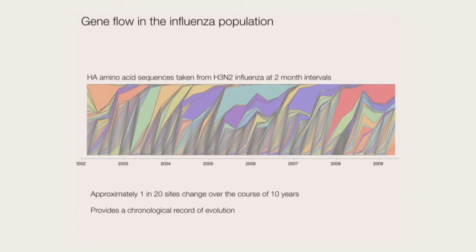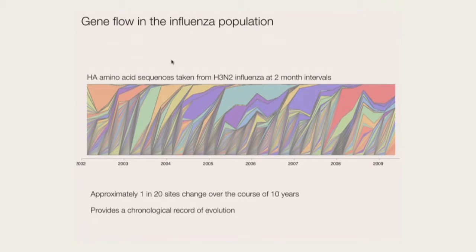If we look at H3N2 over time, we see really fast evolution. I've gathered all the sequences I can from GenBank. You're basically seeing a histogram where at one point about 40% of flu in GenBank is one particular strain, but there's a bunch of strains at low frequency. Year to year there's constant turnover and replacement. What I find really interesting as an evolutionary biologist is that this rate of evolution over 10 years is very similar to what you'd see in a random fruit fly gene over a million years.